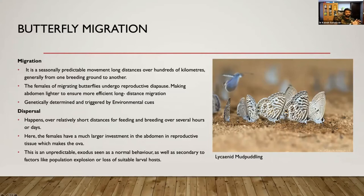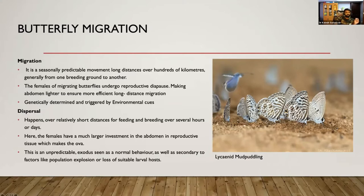In dispersal, movement happens over relatively short distances as part of normal behavior. The female has a full abdomen for reproductive purposes. This is an unpredictable movement — it could be an exodus seen as normal behavior or secondary to factors like population explosion or loss of host plant.